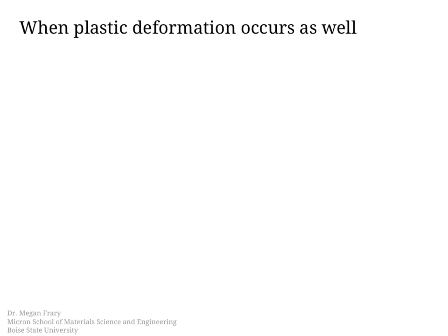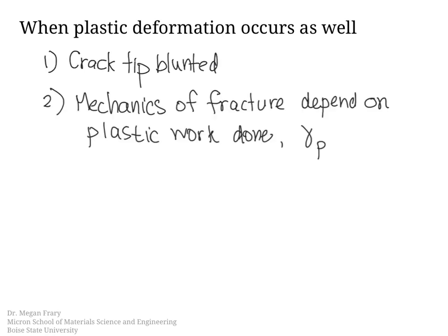If plastic deformation occurs as the crack is growing, there are a couple of things that happen. The first is that the crack tip can be blunted — the crack tip is not quite as sharp because there's some plastic deformation occurring just ahead of the crack tip. The mechanism of fracture will also then depend on the plastic work that is done. We're going to use the symbol gamma_p to indicate the plastic work done as the crack advances.